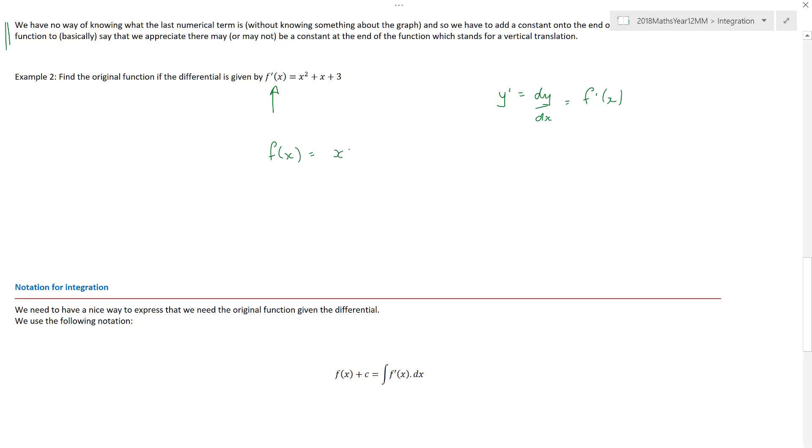So x squared, add one to the power and divide by the new power. Awesome. The next term is x. So add one to the power divided by the new power. This is freaking awesome. This is so simple. What about this three? Well, if we think of three as three x to the power of zero, remember anything to the power of zero is one. So I can write the number three as three x to the power of zero. And now that situation allows me to say that three x to the power of one divided by one. And we know that anything divided by one is one.